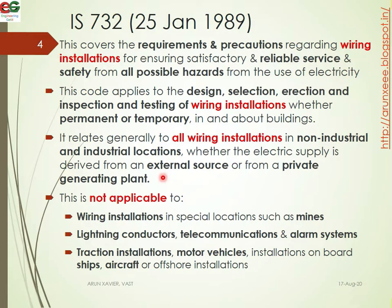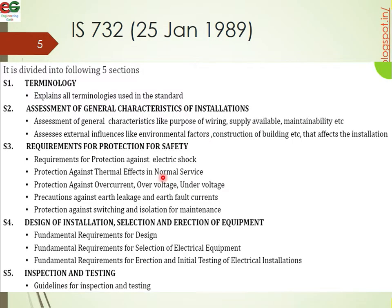This code is not applicable for some applications: wiring installations for mining, lightning conductors, ships, aircraft, motor vehicles, traction systems, and similar installations. The code has five sections. Section 1 covers terminologies and explains what types of terminologies are used in this code.